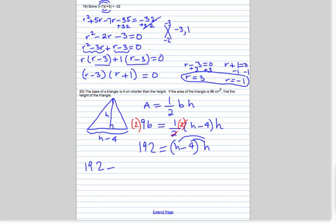192 equals h times h is h squared, h times negative 4 is minus 4h. Now similar to the previous problem, we're going to set everything equal to zero, so we're going to subtract 192 from both sides.